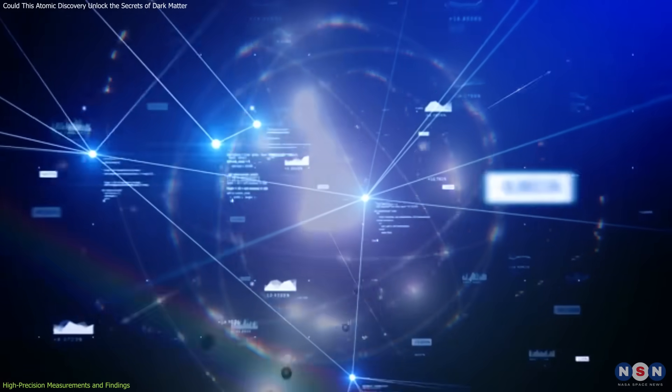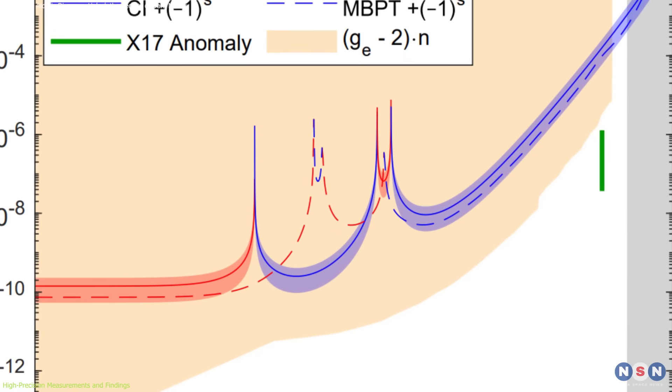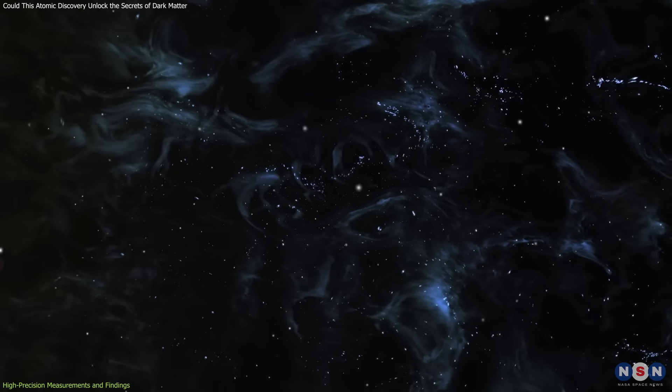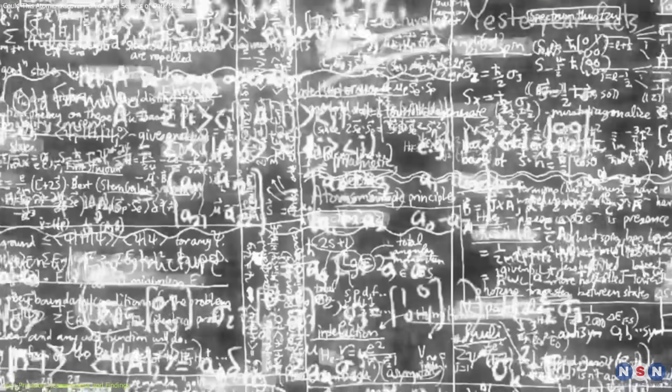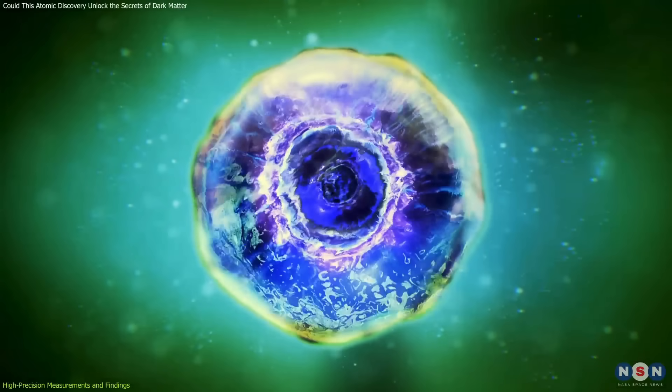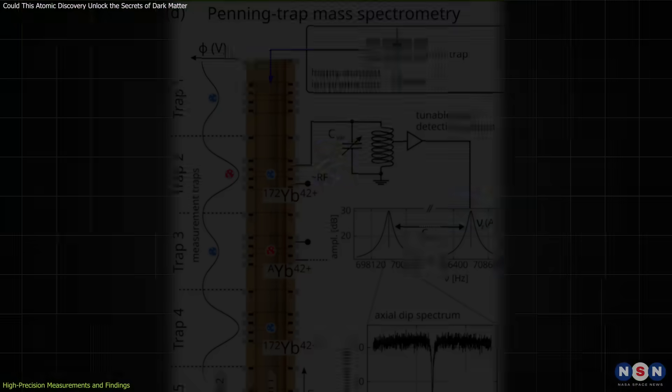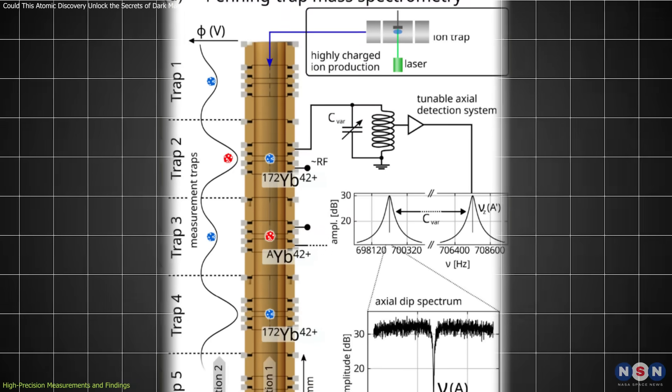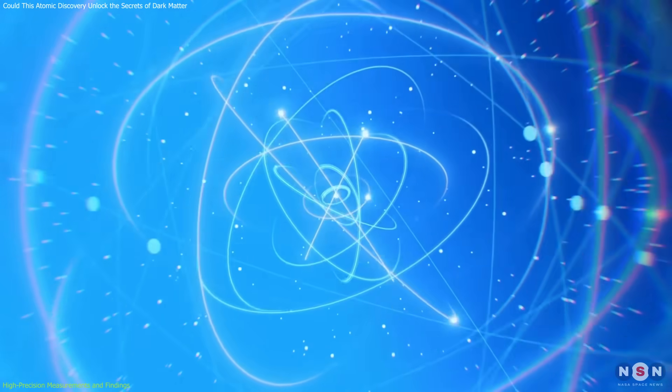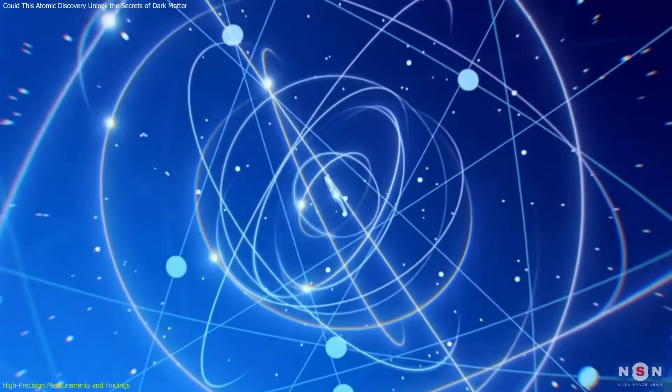After months of careful analysis, the results confirmed that the isotope anomaly was real. However, it was not evidence of a new dark force. Instead, nuclear physics provided the answer. The ytterbium nucleus was deformed in a way that had not been previously understood. This finding showed that high-precision atomic spectroscopy could reveal hidden complexities in nuclear structure—an important discovery in its own right.